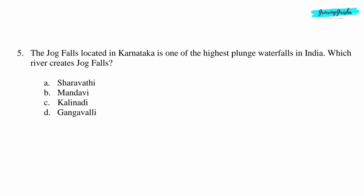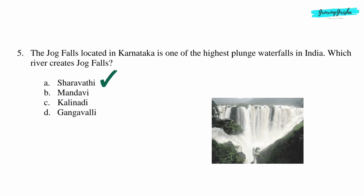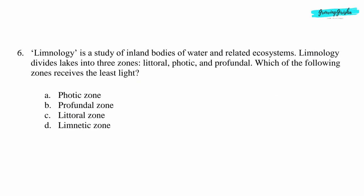Question 5: The Jog Falls, located in Karnataka, is one of the highest plunge waterfalls in India. Which river creates the Jog Falls? Option A: Sharavathi.